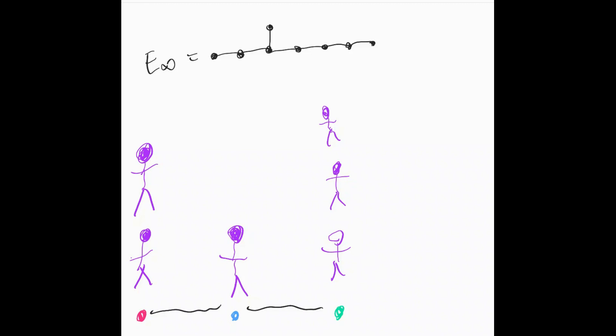Okay, so E8 is this wonderfully symmetric lattice in eight-dimensional space that some people think explains all the fundamental physics. And it turns out that there's a simple game that we can use to understand exactly what the structure of this E8 lattice is.